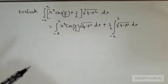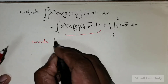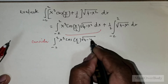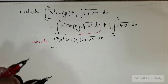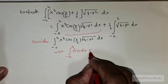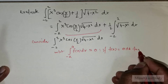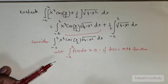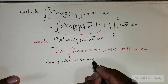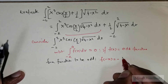Now let us consider the first part: the integral from negative 2 to 2 of x³ cos(x/2) times √(4 - x²) dx. I will be using the property that the integral from negative a to a of f(x) dx equals 0 if f(x) is an odd function.